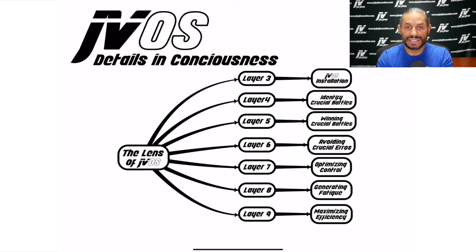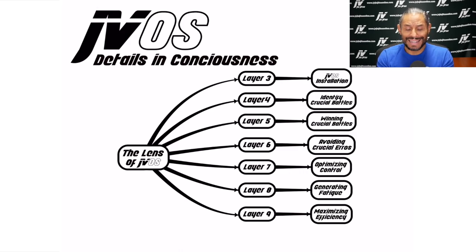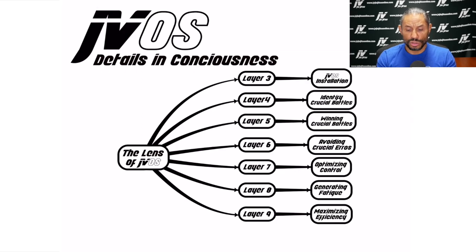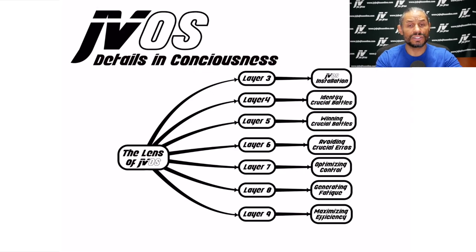Layer nine is maximizing efficiency — whether through movement, optimized control, or timing. Maximizing efficiency is a multifaceted concept: efficiency in your timing, in your breathing, in your mental capacity, in your thinking patterns, in your strategy. Maximizing efficiency on all realms.